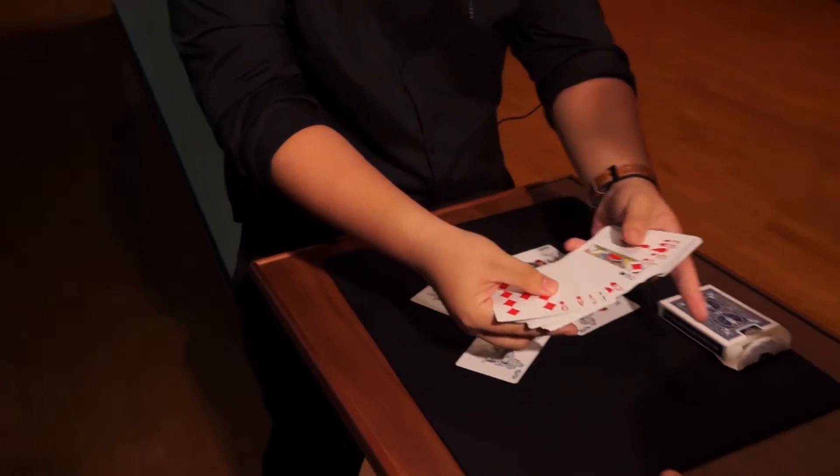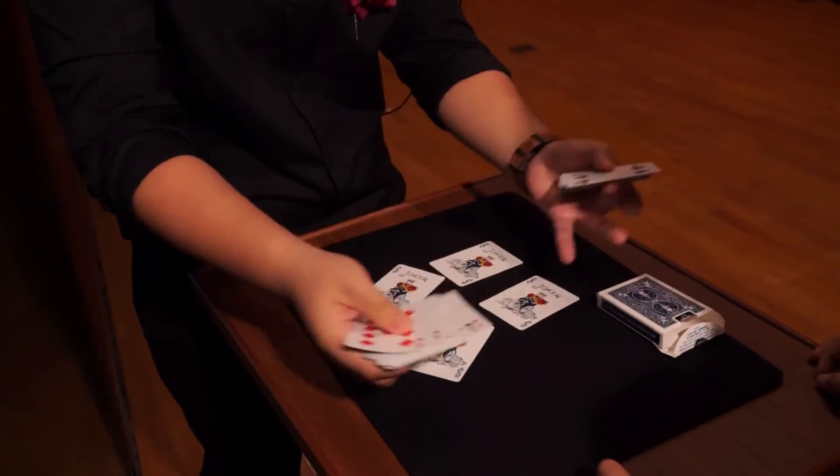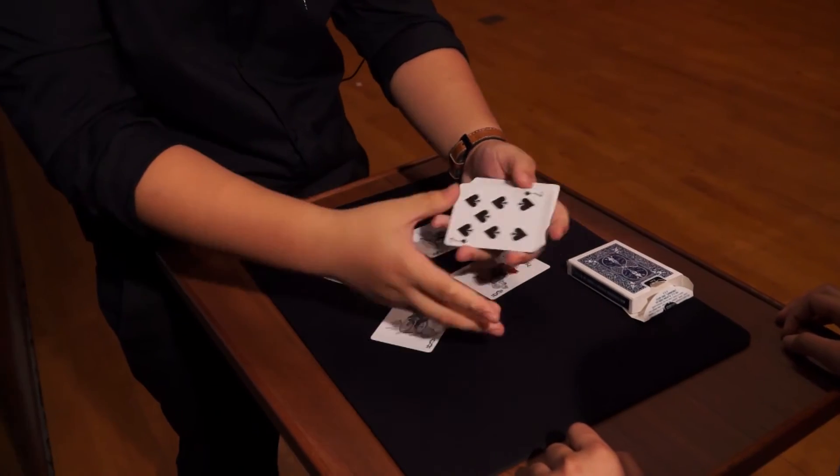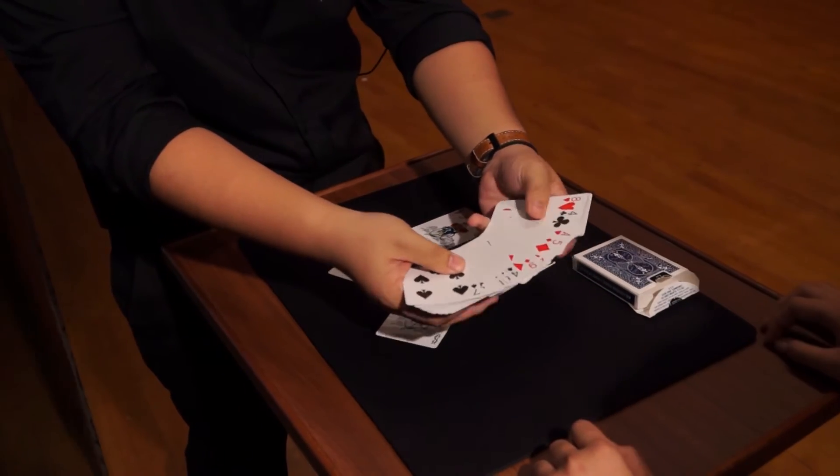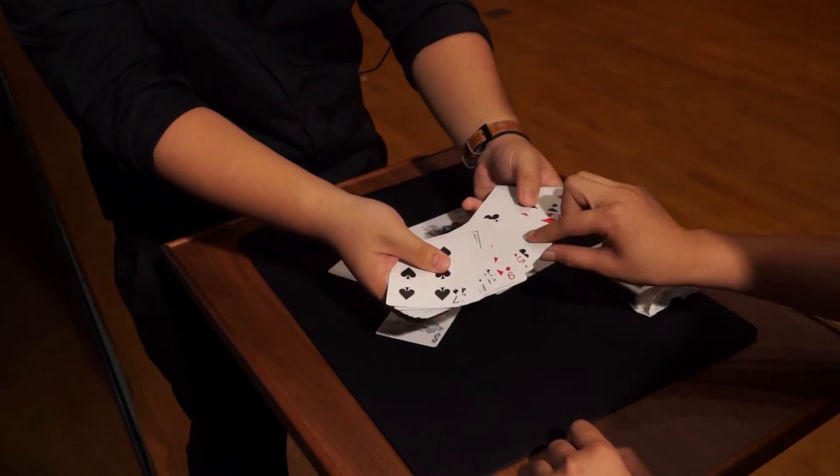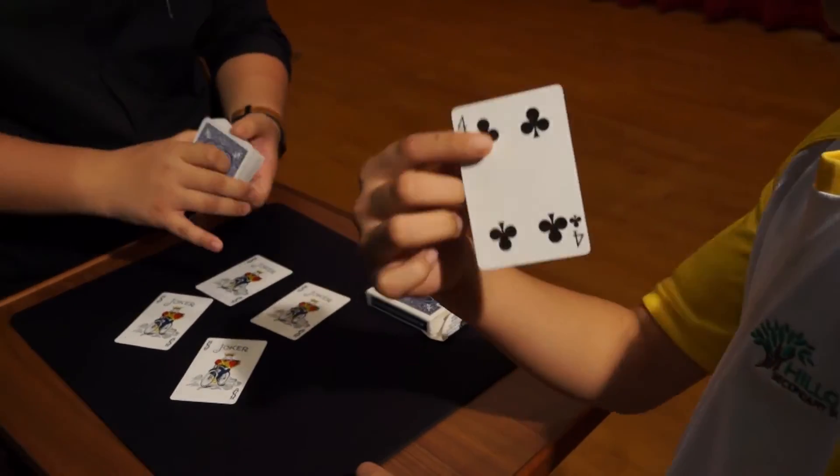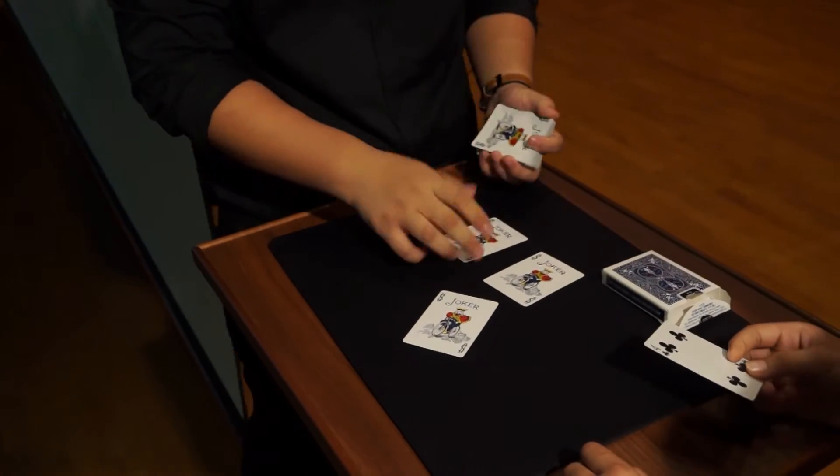Now as you can see, all these cards are different. We have a lot of cards right here. I want you to just pick any one of them. Take it out. It's your own free will. 4 of clubs. Take it out. Show everyone the card. 4 of clubs.